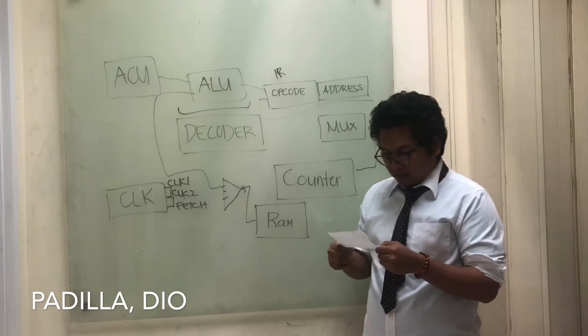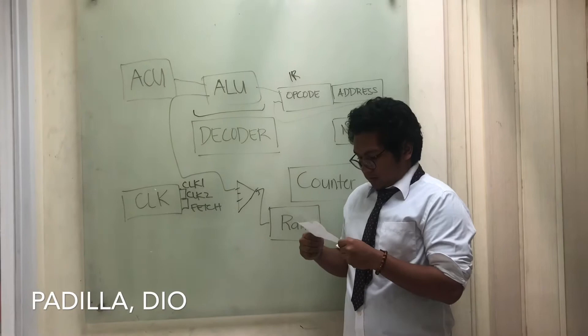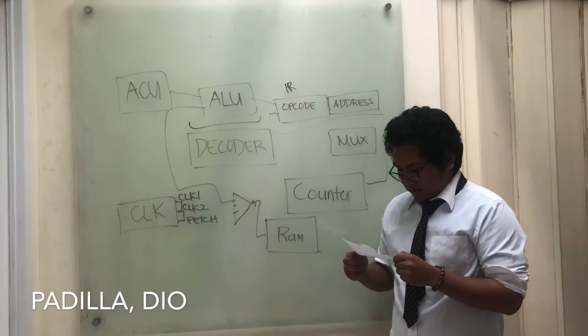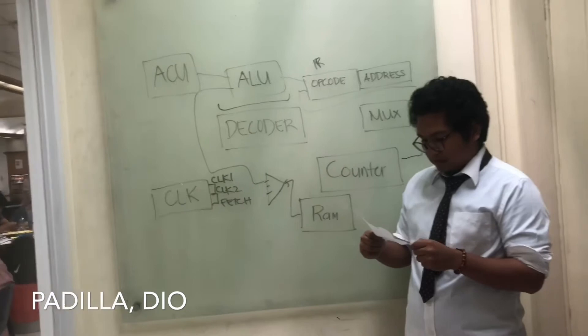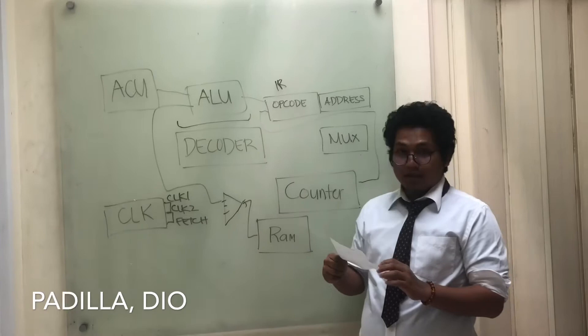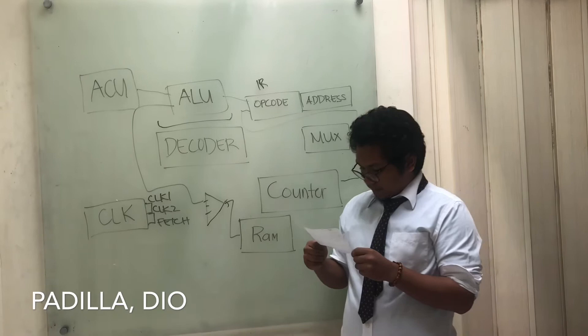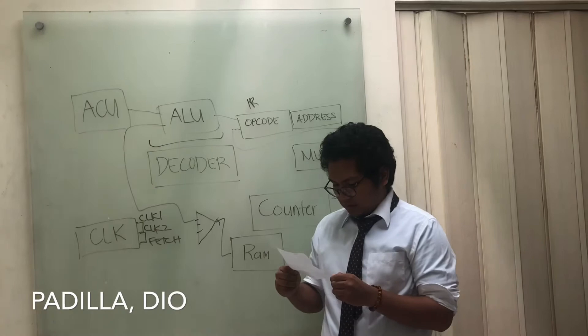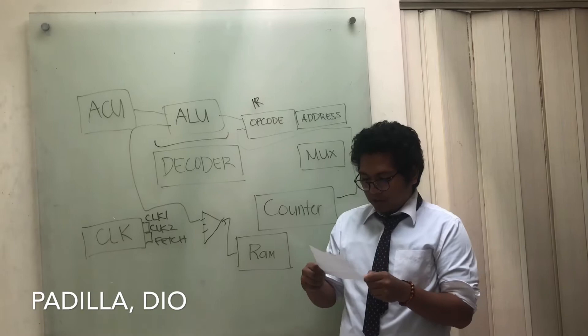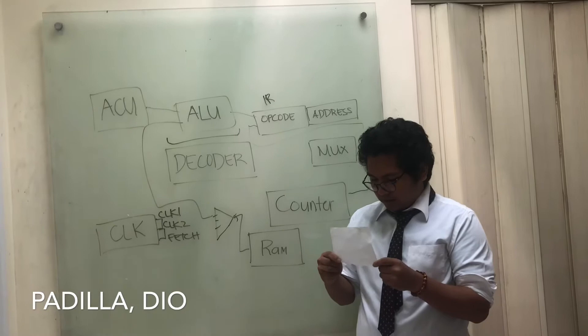The data gets loaded into the accumulator when the decoder issues the LDACC signal. For the store instruction, the memory location of the result to be stored is pointed out by the address bus, and the decoder issues a write signal. Thus, the contents of the data bus are written onto the particular memory location and the data is stored. Lastly, for the jump instruction, the decoder issues a signal allowing the 5-bit content of the address to be loaded into the PC, replacing its previous contents. In sync with the rising edge of the clock pulse, the PC will now point to a new location in memory.